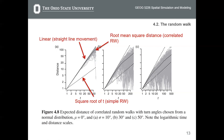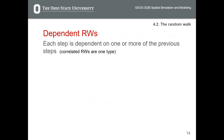This is another property of correlated random walk. I'll stop here, and in the next video I'm going to start with dependent random walks. Thank you.